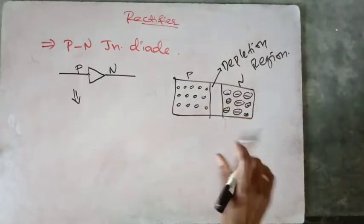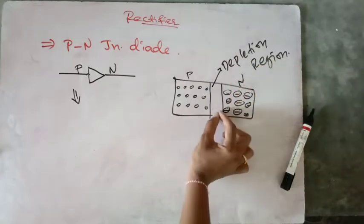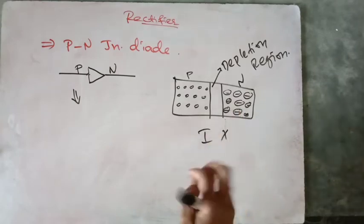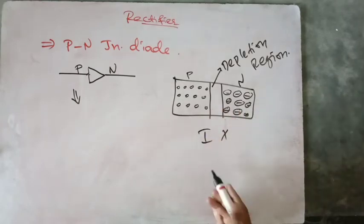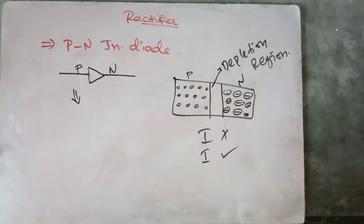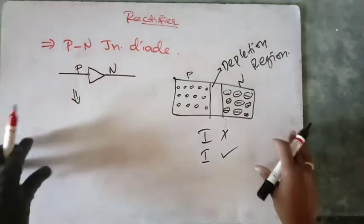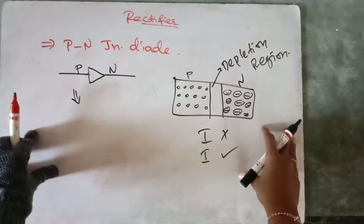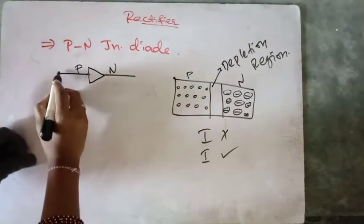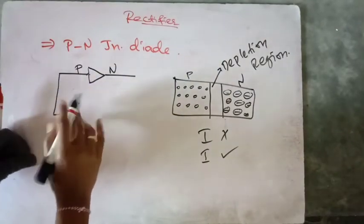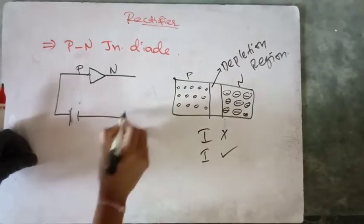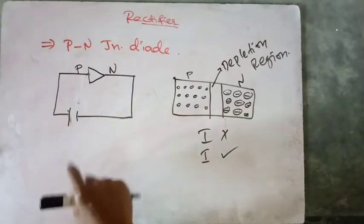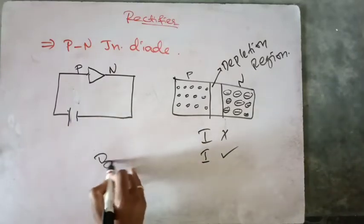If this depletion region is greater, there will be no current flow. And if this depletion region is smaller, then there will be current flow. If you connect a battery to this PN junction diode, the connecting of your battery to this PN junction diode is known as biasing.